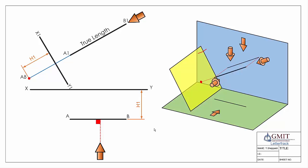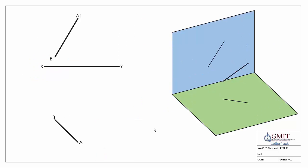In each of the previous examples, one of the primary views already contained a true length line. In our next example that isn't the case — the line is sloping in both front elevation and plan view, so neither view is a true length. To find the point view here, we first need to find the true length, which we can do by taking an auxiliary. Starting from the plan view is usually easier as it's simpler to imagine walking around the object.